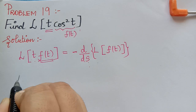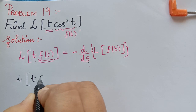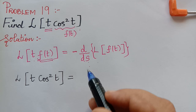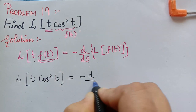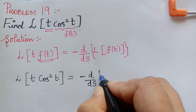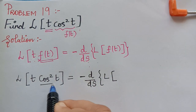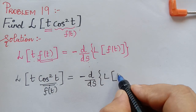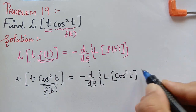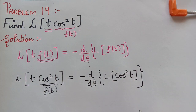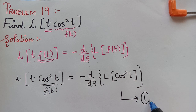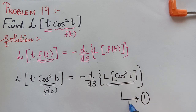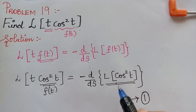Here we have to find the Laplace transform of t·cos²t, and applying this theorem, we can write it as negative d/ds of L{f(t)}. What is f(t) here? When we compare, we see that f(t) is cos²t. So we need L{cos²t}. Let us mark this as equation 1, so that we will separately find L{cos²t} and then substitute in equation 1 in order to find the answer.